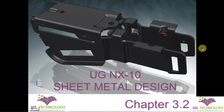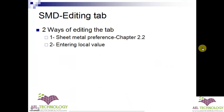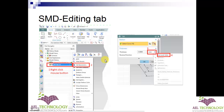Welcome to a new session of UGN X10 sheet metal design. We are in chapter 3.2. In this chapter, we'll be dealing with how to edit a tab — mainly using the local value of thickness. The global value of thickness is set in sheet metal preferences, explained in chapter 2.2. Another way is entering a local value, which I'm going to explain now.